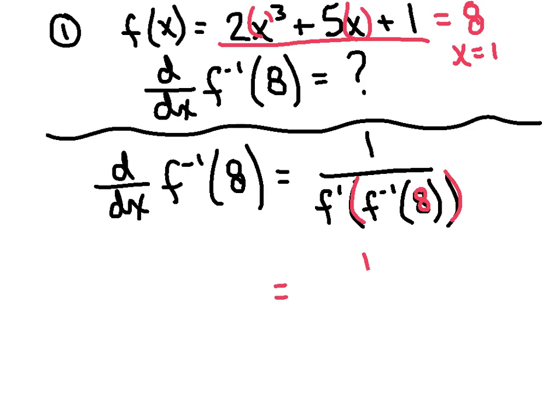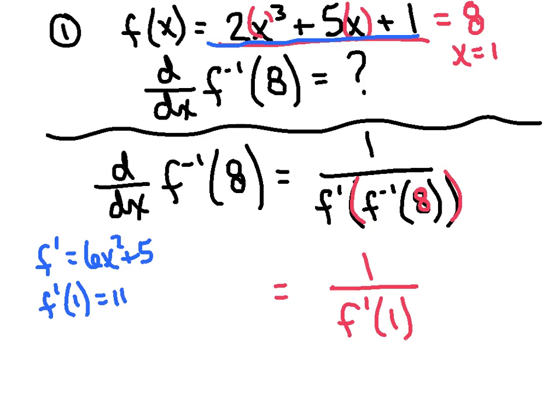So what do we got here? We've got 1 over f′(1). Now all I need to do is calculate a very simple derivative of that polynomial. I'm going to say f′ is really 6x² + 5. And if I evaluate that rascal at 1, I'm going to get 11. So my final answer for this particular problem is not 11, but 1 over 11.